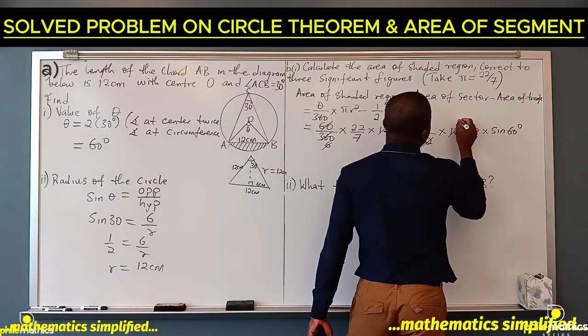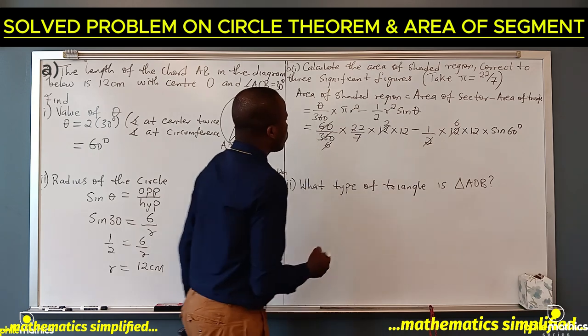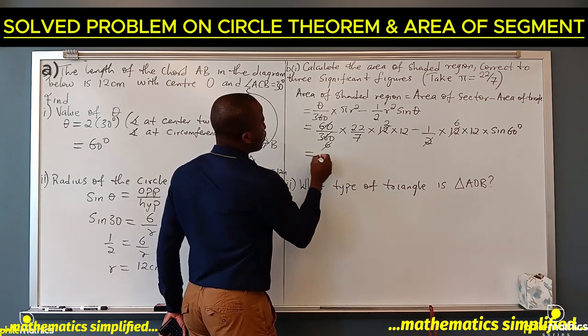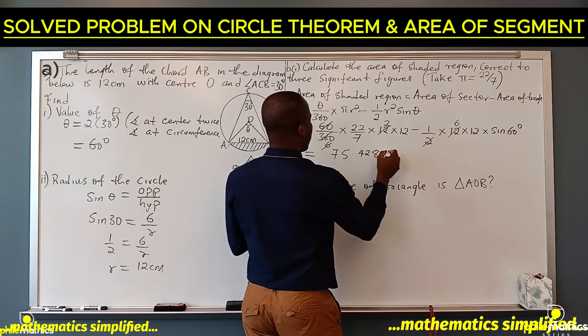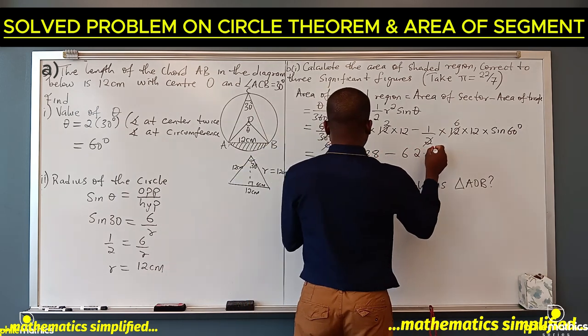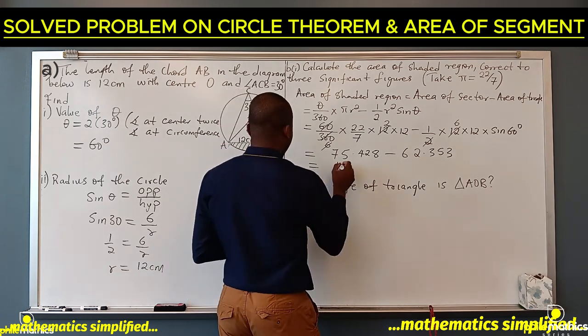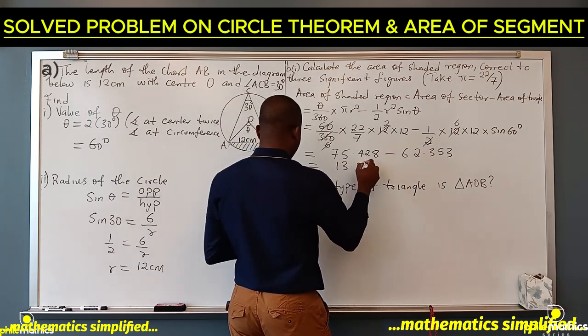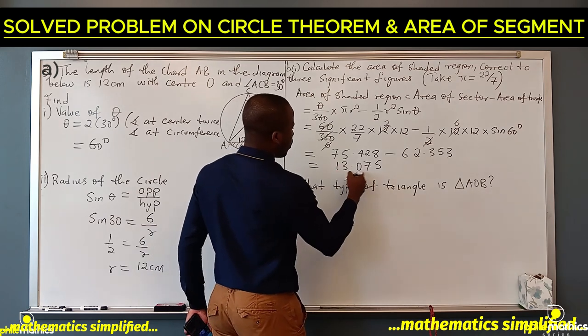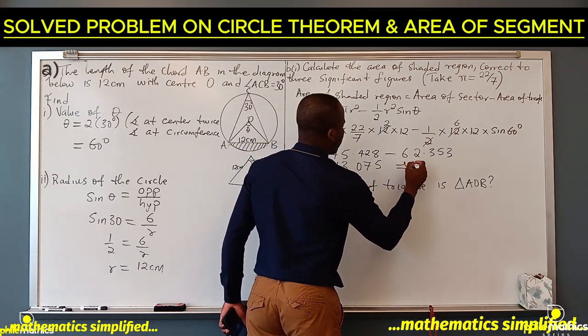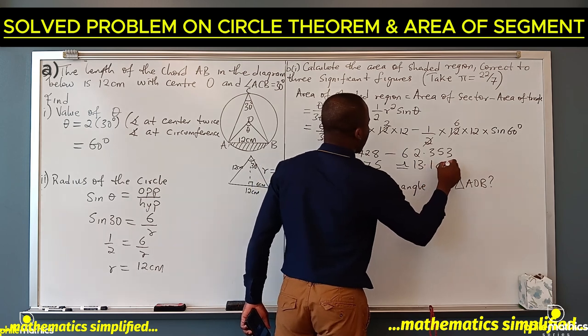This is 6 and sine 60 is √3 over 2. So we are left with 75.428 minus 62.353. If we subtract we have 13.075, and to three significant figures, that is 1, 2, 3, we are approximately 13.1 centimeter square.